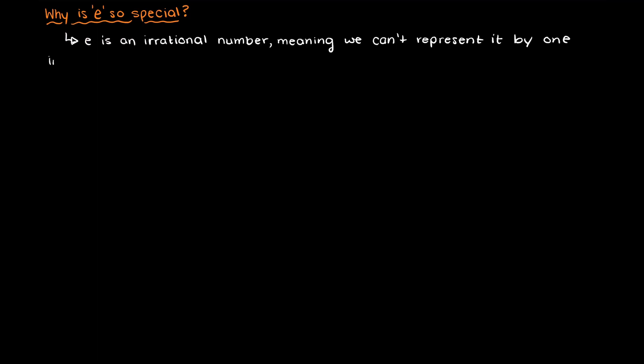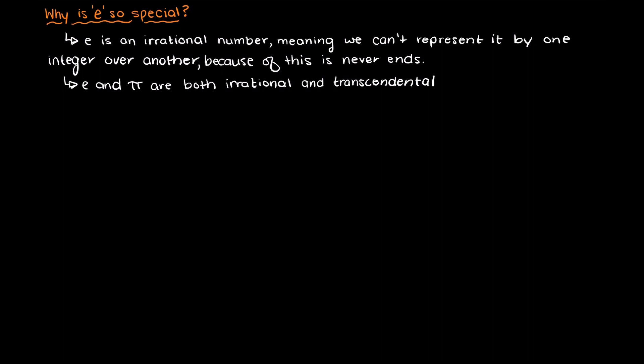E is an irrational number, meaning that we can't represent it by one integer over another, and because of this it doesn't end, it just goes on and on forever, just like pi for example.